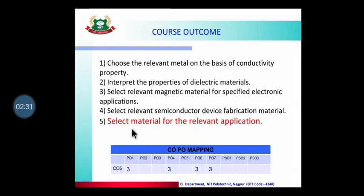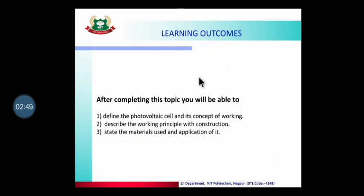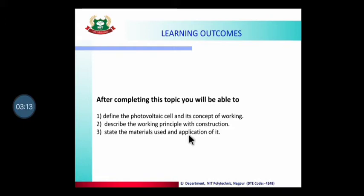This is the topic of Unit Number 5, and the course outcome is to select materials for the relevant application. This is Course Outcome 5, mapped with COs and POs. The learning outcomes for today's topic are: we will be able to define the photovoltaic cell and its working concept, understand its working principle and construction, and identify the materials used and applications of the photovoltaic cell.